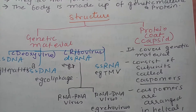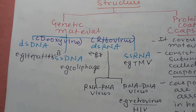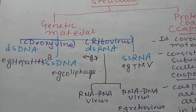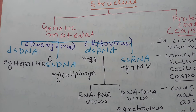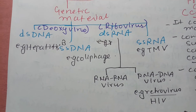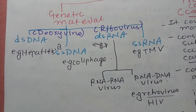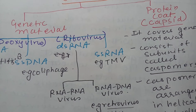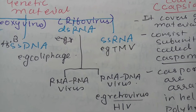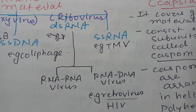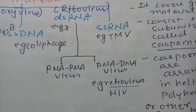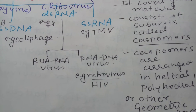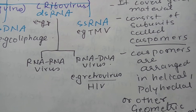The protein coat is also called the capsid. The genetic material could be DNA or RNA. If DNA is the genetic material, it is called a deoxyvirus; if RNA is the genetic material, it is called a ribovirus. DNA could be double-stranded or single-stranded, and RNA could also be double-stranded or single-stranded. For double-stranded RNA, there exist two varieties: RNA-RNA virus or RNA-DNA virus.